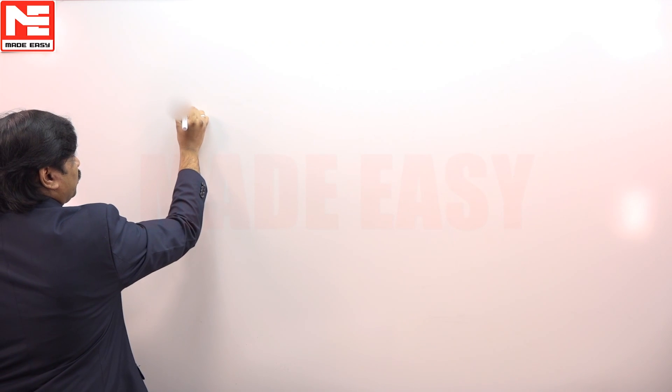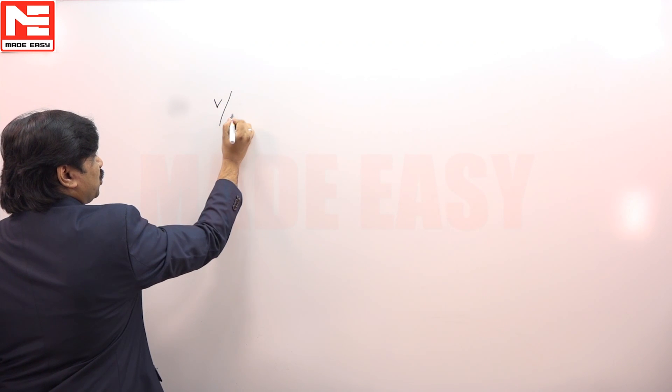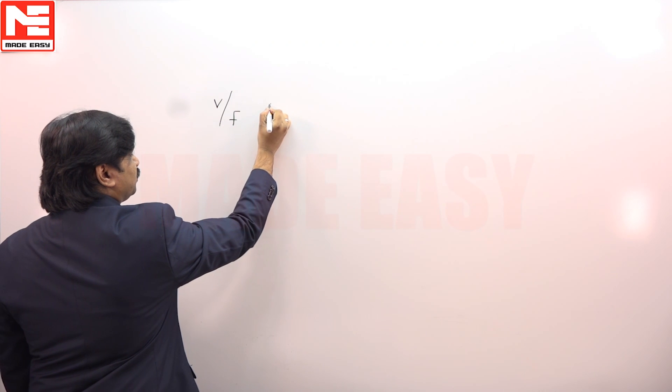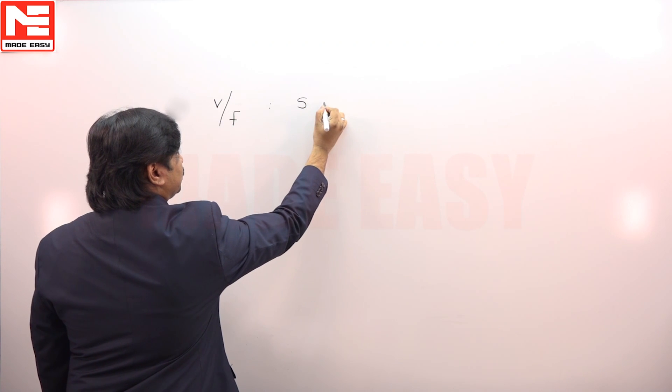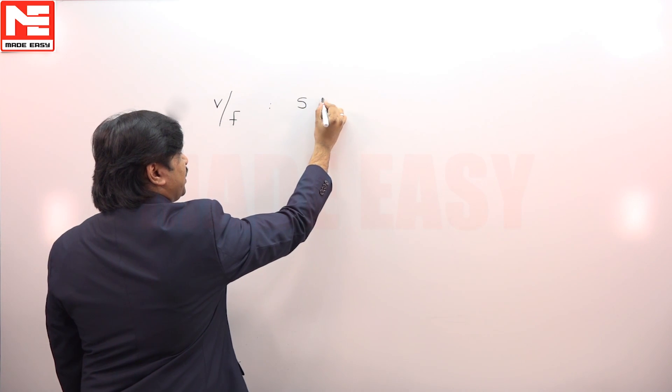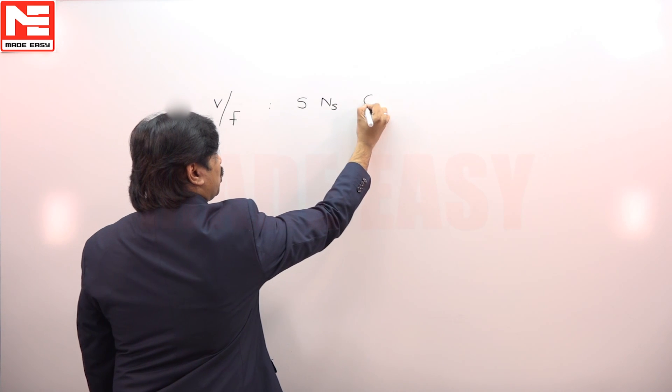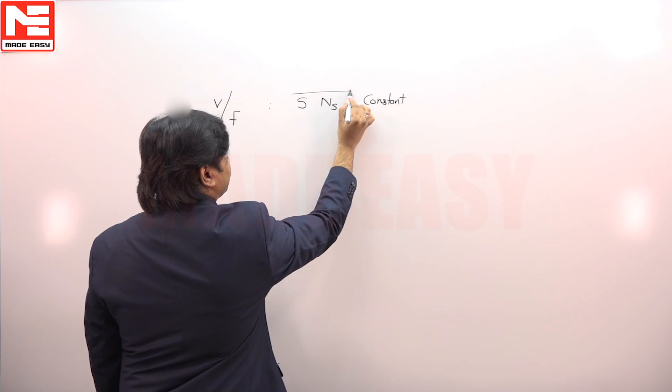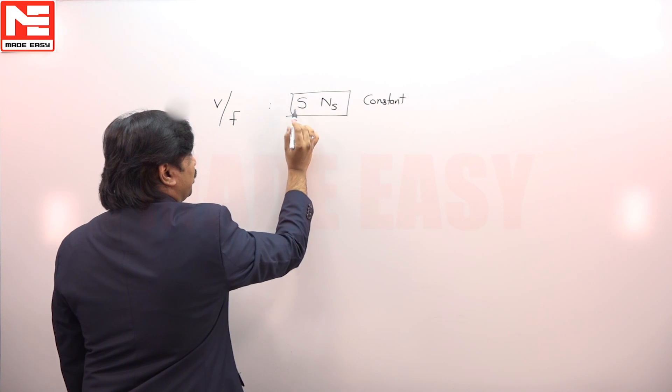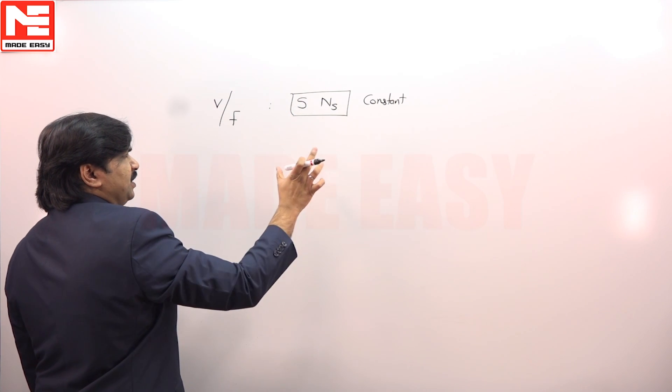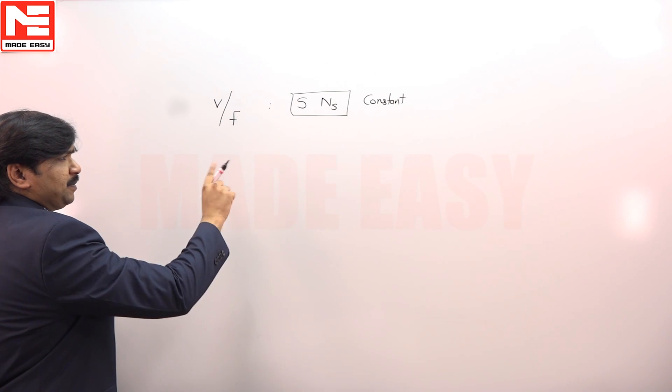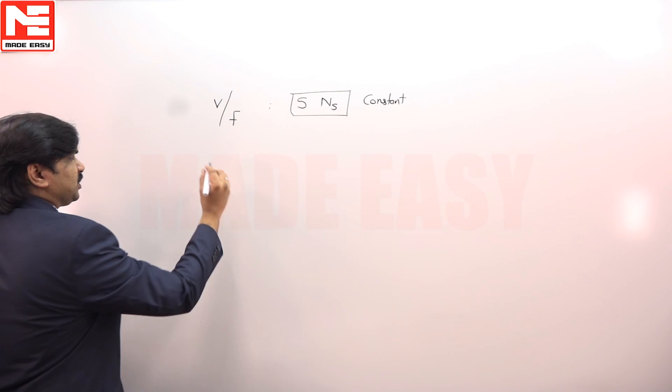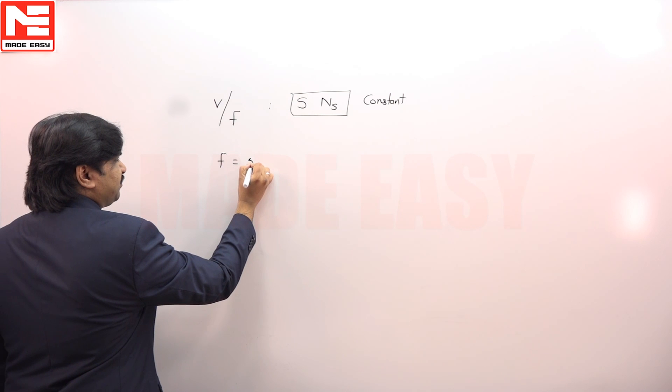V by F control induction motor - slip speed remains constant when you are doing V by F control. For example, it was given first frequency is 50 Hertz.